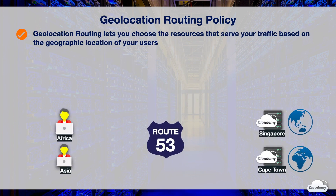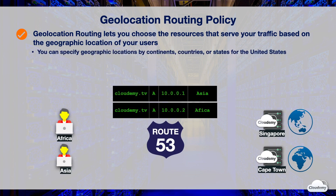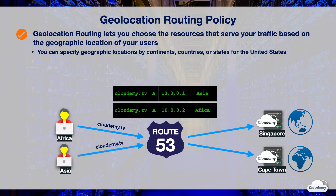Geolocation routing lets you choose the resources that serve traffic based on the geographic location of your users. When you choose geolocation routing, you start by creating one record for each of the different geographic locations. You can specify geolocations by continents, countries, or states for the United States. For example, you can configure all queries from Africa to be routed to a load balancer in the Cape Town region, and queries from Asia routed to another load balancer in Singapore.